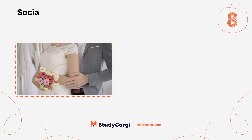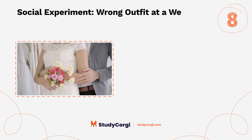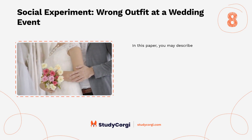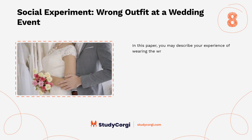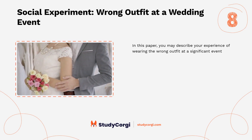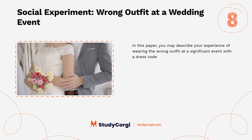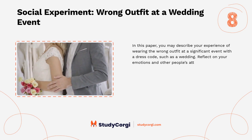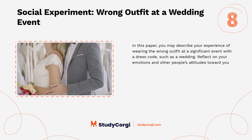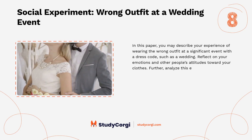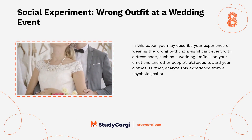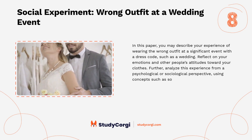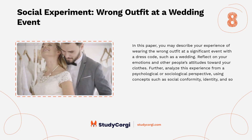Social experiment — wrong outfit at a wedding event: in this paper, you may describe your experience of wearing the wrong outfit at a significant event with a dress code, such as a wedding. Reflect on your emotions and other people's attitudes toward your clothes. Further, analyze this experience from a psychological or sociological perspective using concepts such as social conformity, identity, and social roles.